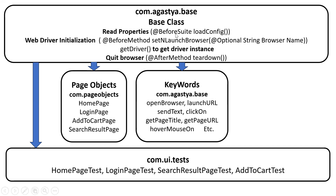These parameters are defined in the configuration file and that file gets loaded before the suite using the @BeforeSuite annotation. Then WebDriver initialization has to be done before every test case, so I use the @BeforeMethod annotation for setting and launching the browser. GetDriver returns the driver instance which is the same for the entire framework, and quit browser quits the browser after every test case using the @AfterMethod annotation. I also created a Keyword class with keywords like open browser, launch URL, send text, click on, and get page title.